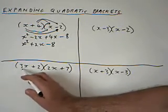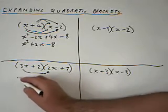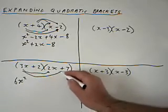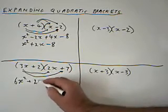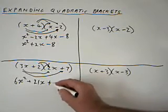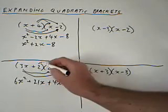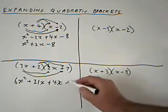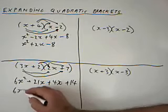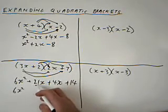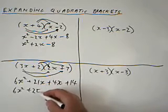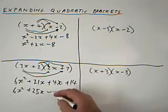Now this one. 3x times 2x, 6x squared. 3x times 7, plus 21x. 2 times 2x, plus 4x. And 2 times 7, plus 14. 6x squared. Collect the like terms. 21 plus 4, plus 25x, and plus 14.